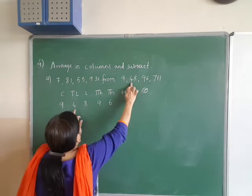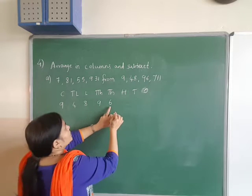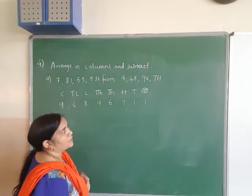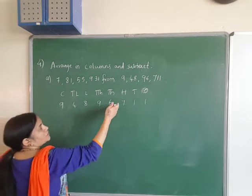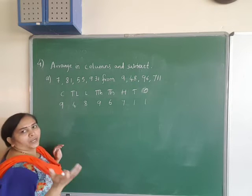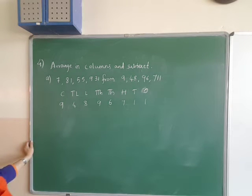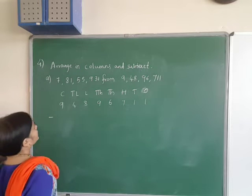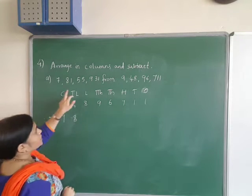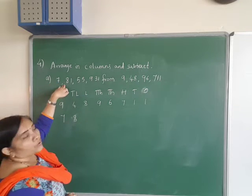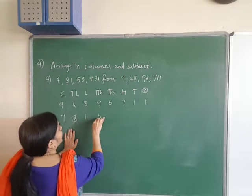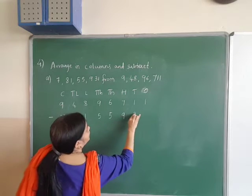You can arrange from right to left according to place value: ones, tens, hundreds, thousands, ten-thousands, lakhs, ten-lakhs. You have to arrange column-wise, then subtract. Write the number column-wise according to place value: 1, 5, 5, 9, 3, 1.